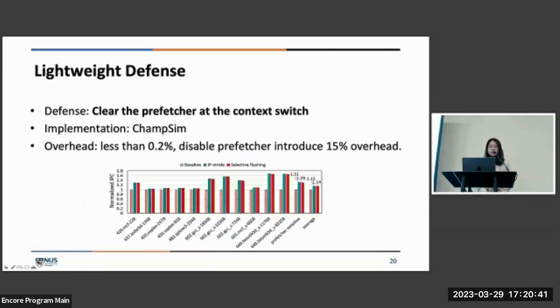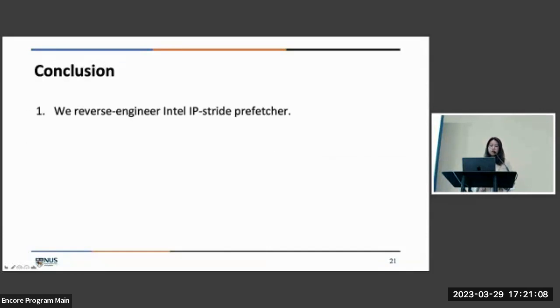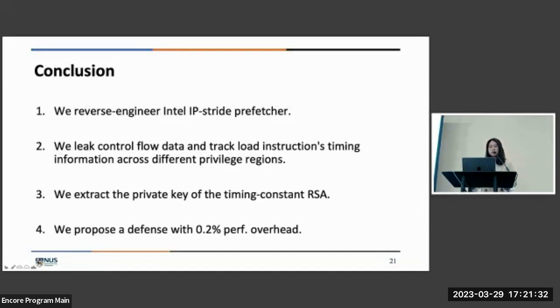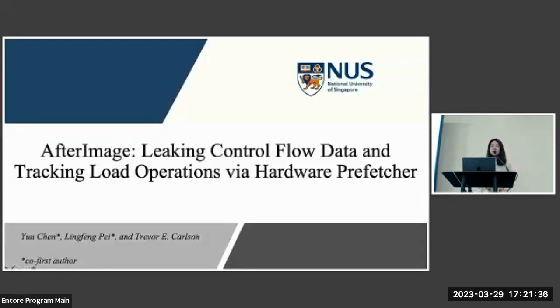In the end, we propose a lightweight defense, which is basically to clear the prefetcher whenever the context switch happens. We implemented using a simulator called ChampSim, which is the platform to evaluate many state-of-the-art prefetchers. We found that our mitigation has an overhead of less than 0.2%, while a naive mitigation that disables prefetchers will introduce a 15% performance overhead. To conclude this work, we first reverse engineered Intel IP-stride prefetchers. We revealed many undocumented features. And second, we leak control flow data and we track load instructions timing information across different privilege domains, such as threads, processes, user-kernel, and SGX. And third, we extract the private key of the timing-constant RSA within a short time. And in the end, we propose this lightweight defense. And we are happy to take any questions. Thank you.